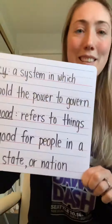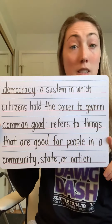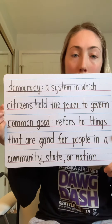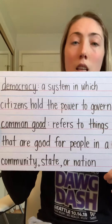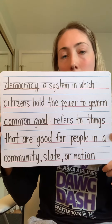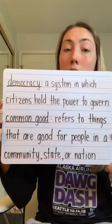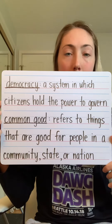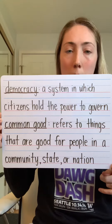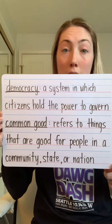There are four vocabulary words that will come up in this chapter. Hopefully you can see this — I'll skip back if not. The first word is democracy. Democracy is a system in which citizens hold the power to govern. The second word is common good, and that refers to things that are good for people in a community, state, or nation. If you want to take time to write these vocabulary words down, pause the video and do that now.